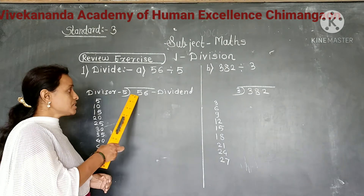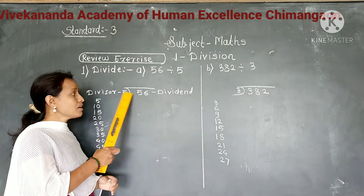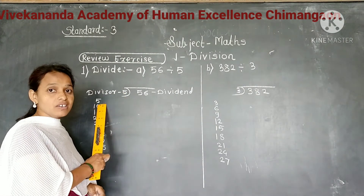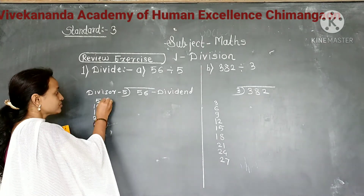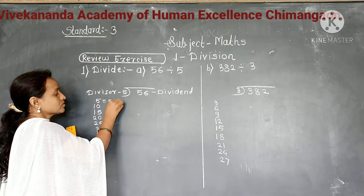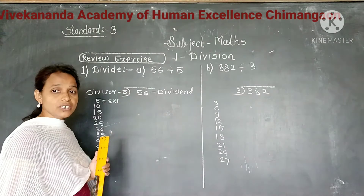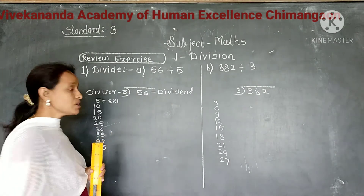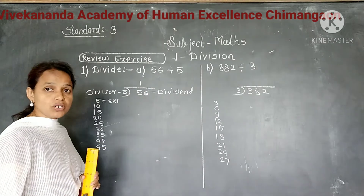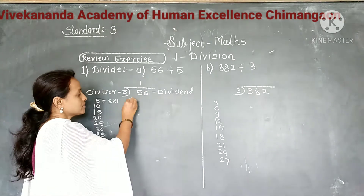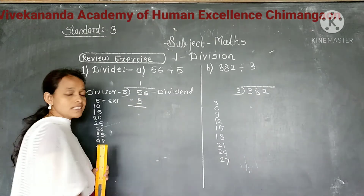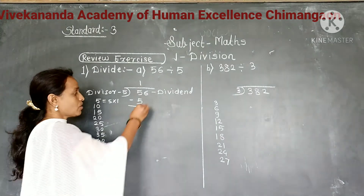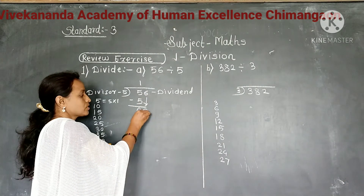We write the table of 5 because the divisor is 5. Now we start from the tens place. The digit in the tens place is 5. So we divide 5 by 5. 5 comes in the first place of the multiplication table of 5. So we divide 5 by 5, it gives 1 as a quotient. Write 1 as a quotient in the tens place and write product 5 below 5. Subtract, it gives 0.